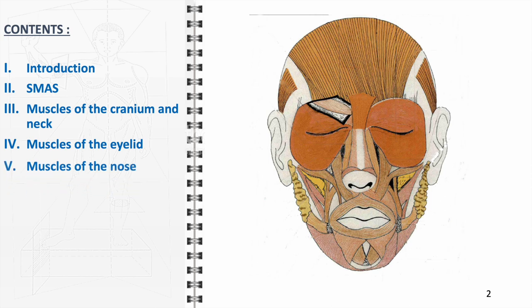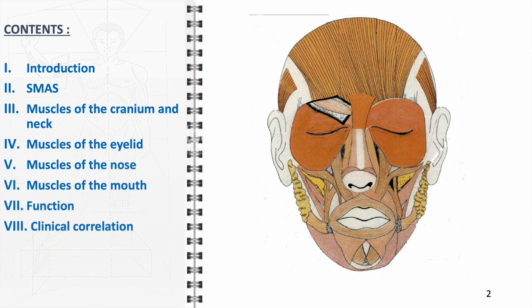We'll then explore the different muscle groups, including those in the cranium and neck, the delicate muscles of the eyelids, the defining muscles of the nose, and the expressive muscles around the mouth, emphasizing their roles in facial movement and speech. Before concluding, we'll also cover common facial muscle disorders in our clinical correlation section.